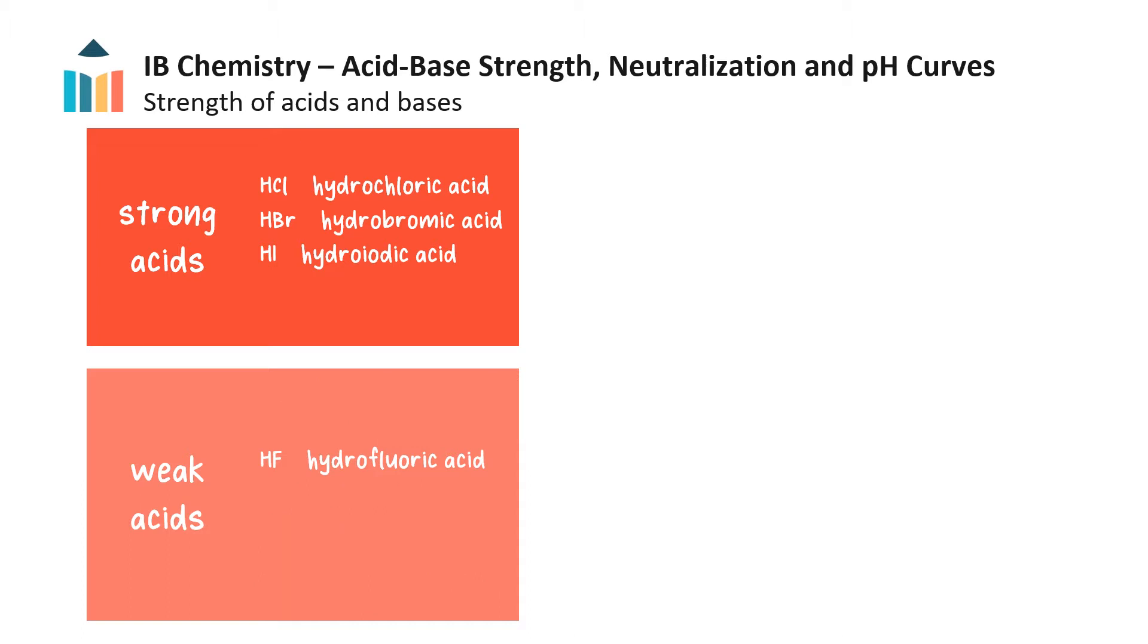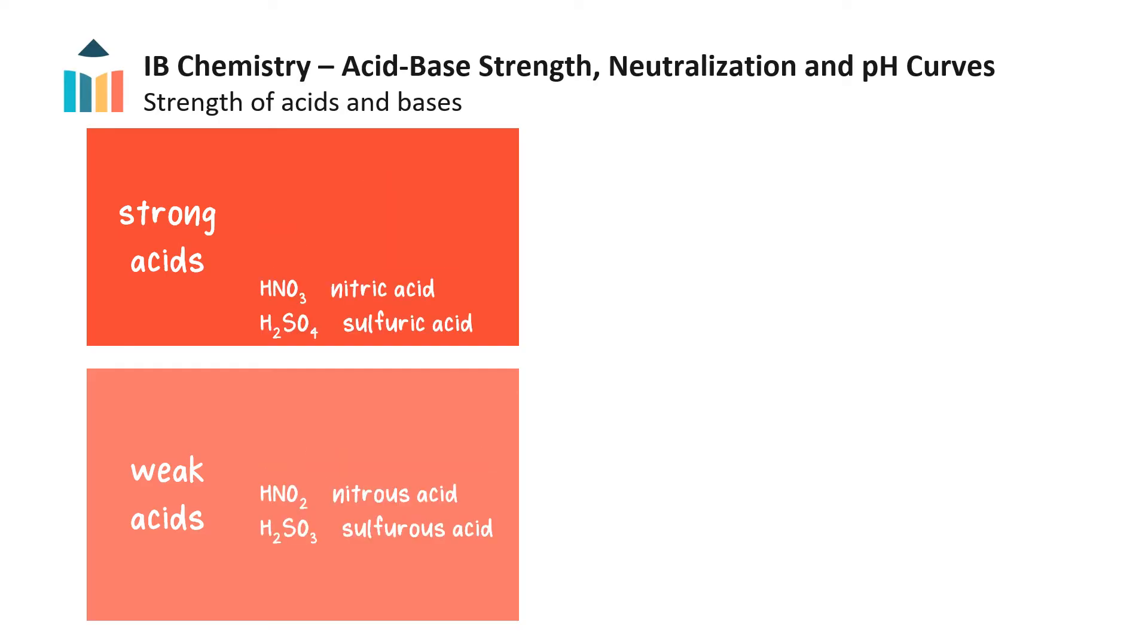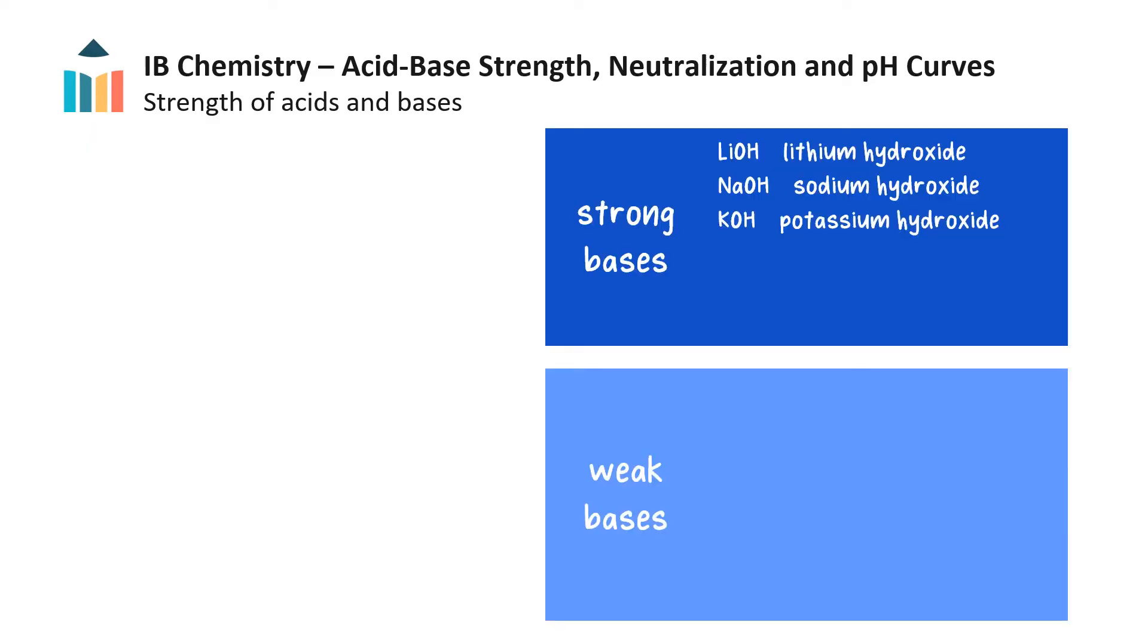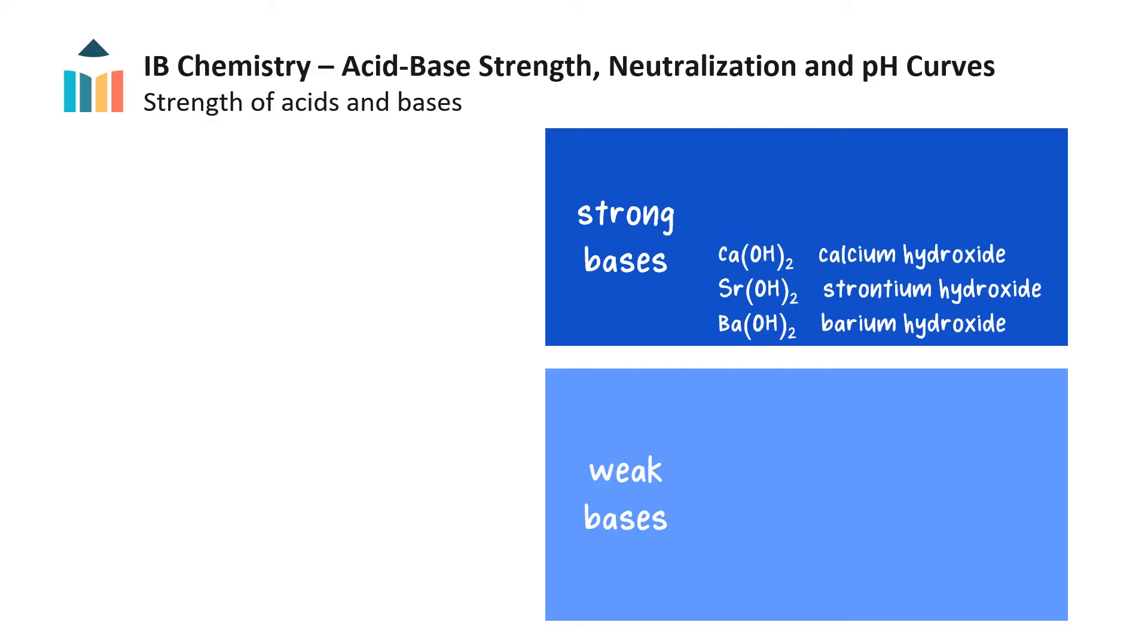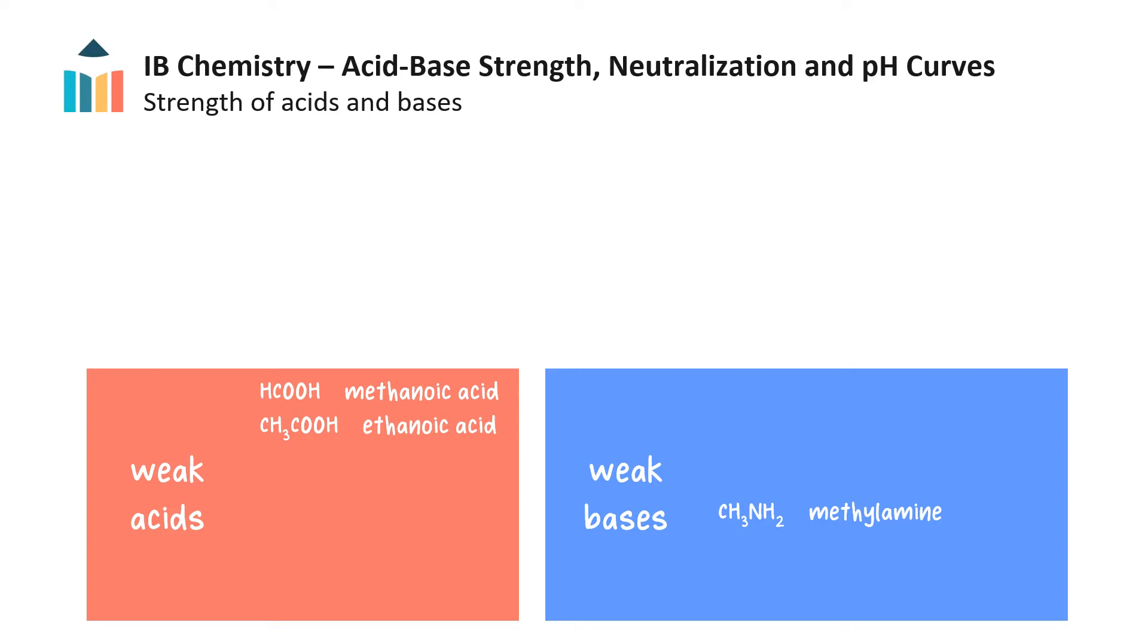Notice that the acid halides, except hydrofluoric acid, are strong acids. Nitric and sulfuric acid are strong, but nitrous and sulfurous acid are weak. Carbonic and phosphoric acid are weak acids. The group 1 hydroxides are strong bases, as well as the more soluble group 2 hydroxides. Ammonia is a weak base, as well as methyl amine. In fact, most organic compounds are either weak acids or weak bases.